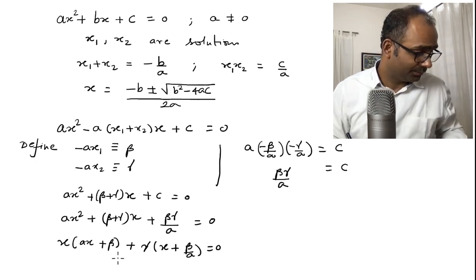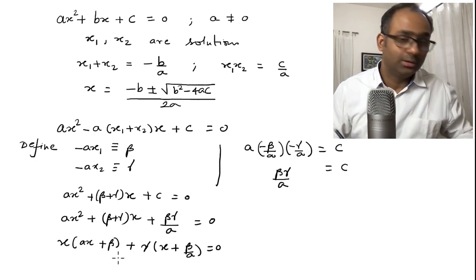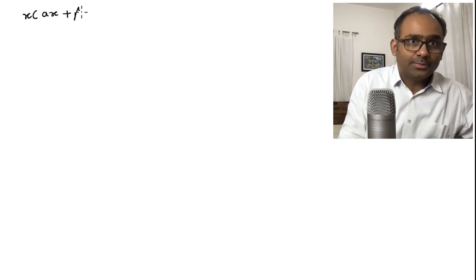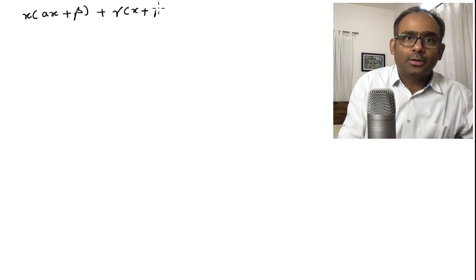Let us say, maybe I will write it again. What we have on the previous page is x times ax plus beta plus gamma times x plus beta over a. This is equal to 0.